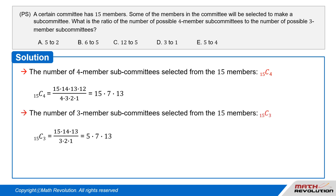The number of three-member subcommittees selected from the 15 members is 15 times 7 times 13 over 3 times 2 times 1, which is equal to 5 times 7 times 13.